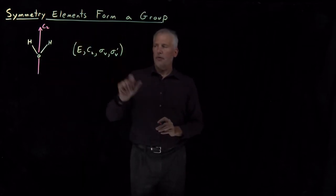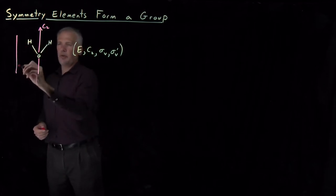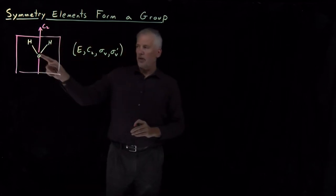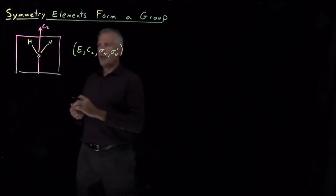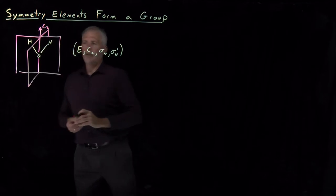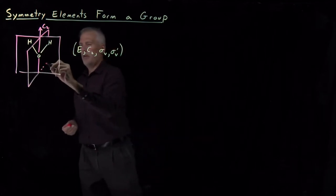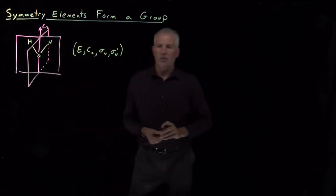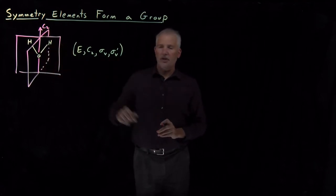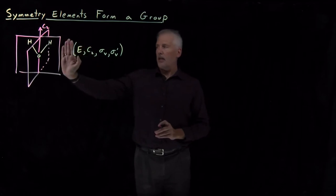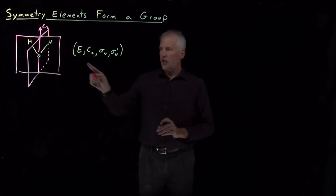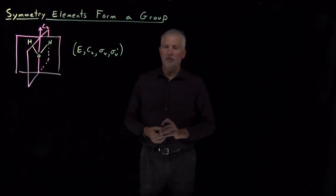There's two different reflection planes. There's one that's in the plane of the board that cuts every atom of the molecule in half, and then there's one that bisects the molecule as well. So we call those both vertical reflection planes because they contain this C2 axis. They're standing up straight vertically if the C2 axis is pointing upwards. So those are the only symmetry elements of a water molecule.